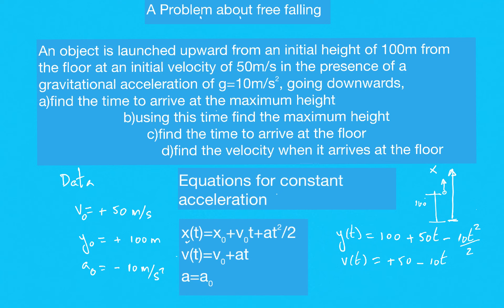Writing the equations and plugging in the numbers: y(t) = y₀ + v₀t + ½at² = 100 + 50t − ½(10)t², and v(t) = v₀ + at = 50 − 10t. These are the two equations of motion for this problem.